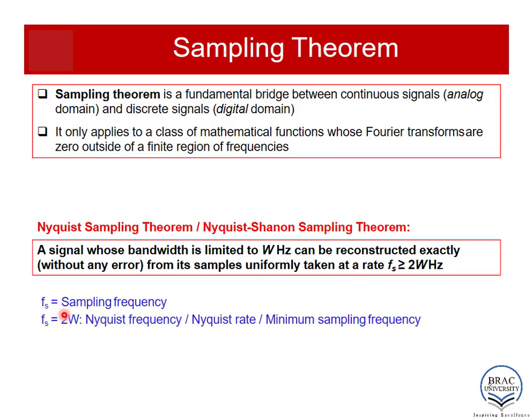One thing to note is that the sampling theorem is applicable only to signals which are frequency limited. That means if a signal has an infinite frequency band, the sampling theorem will not be applicable to it. If the signal is limited in frequency — that is, it covers a certain range in the frequency domain — then the sampling theorem will be applicable.